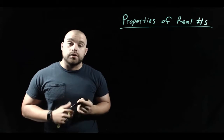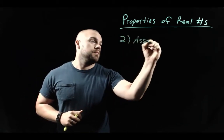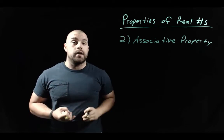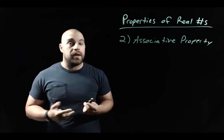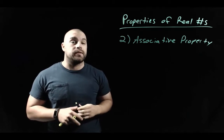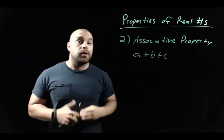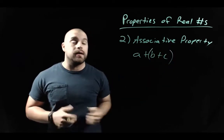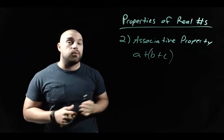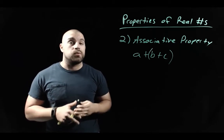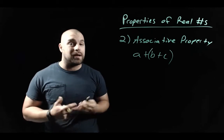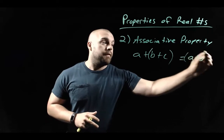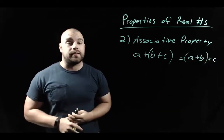Property number two is the associative property, which works for both addition and multiplication. For addition with three terms — say a plus b plus c — the associative property says we can regroup and add in any order. So we could add b and c first, or add a and b first and then add c, and we get the same exact answer.